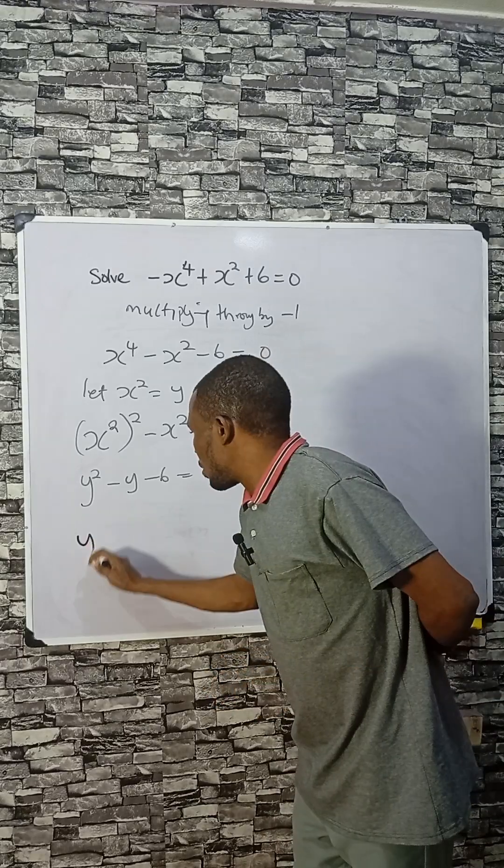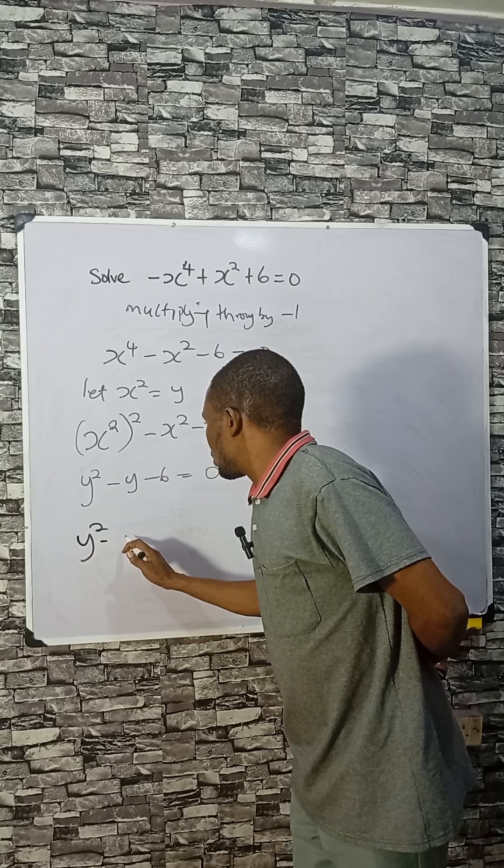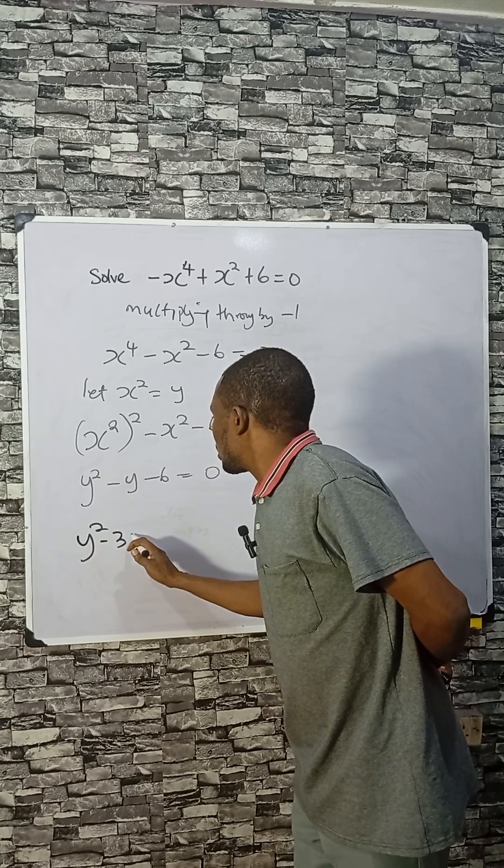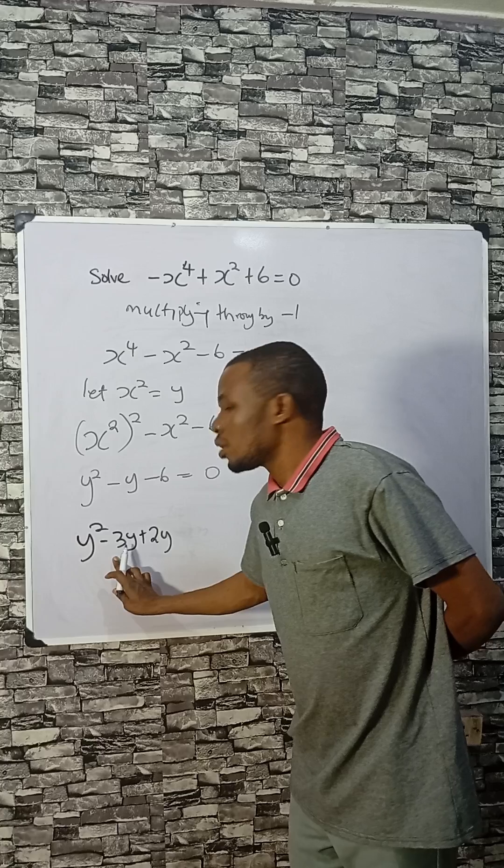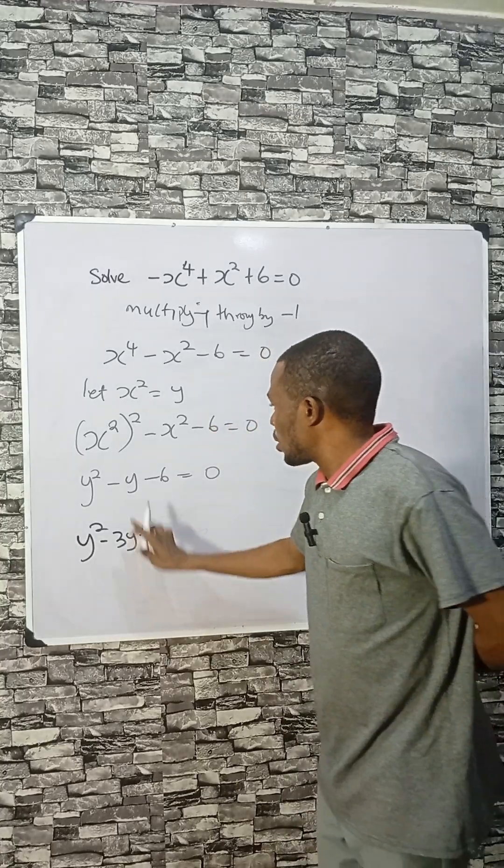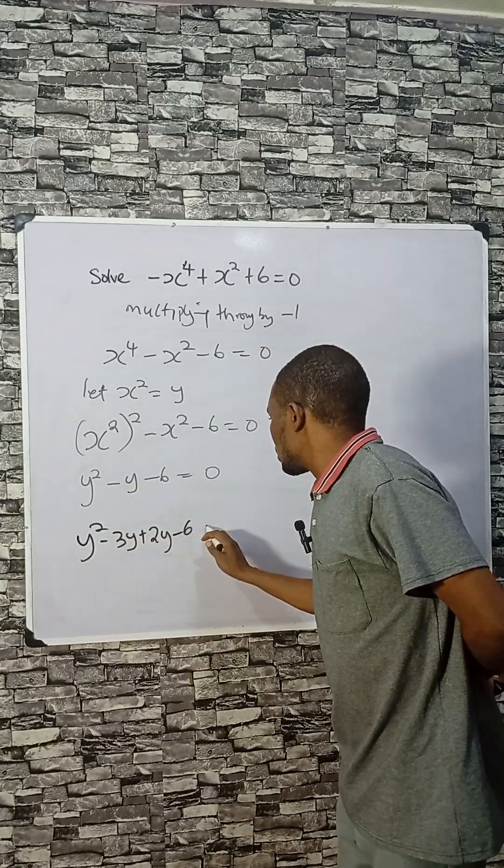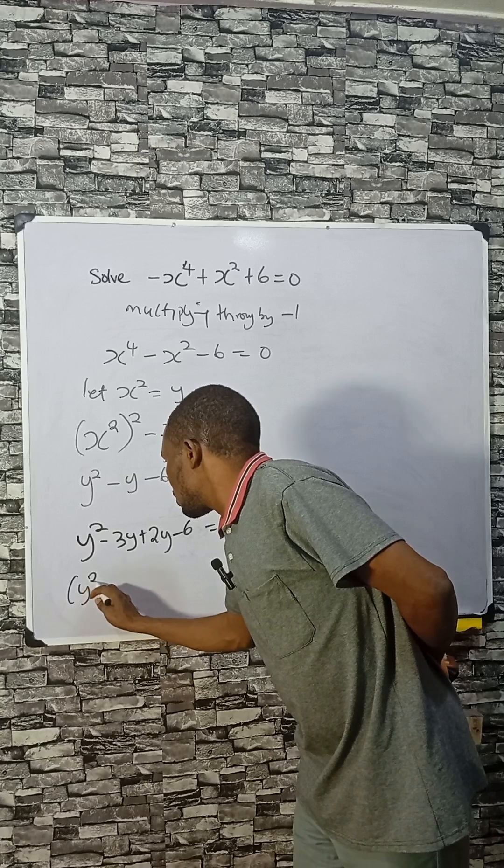By factorization of y squared minus 3y plus 2y, because minus 3 plus 2 will give you minus 1, and minus 3 times 2 gives minus 6, equal to zero. So by grouping we have this.